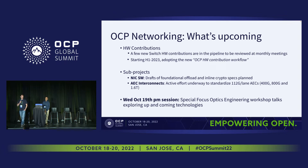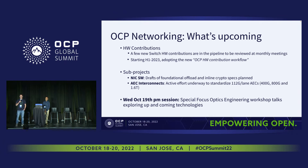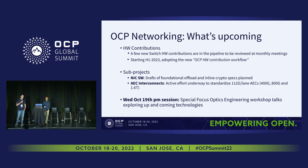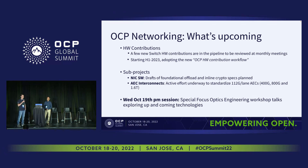What's upcoming: we have a couple of switch-out contributions in the pipeline. OCP is also forming a new contribution workflow, which we'll discuss in our coming monthly meetings. For sub-project updates, the NIC software is focusing on foundational offloads and crypto work. The AECs are looking forward towards 112 gig per lane AECs with up to 1.6 terabits per second per cable.